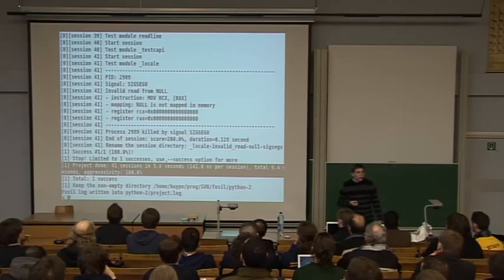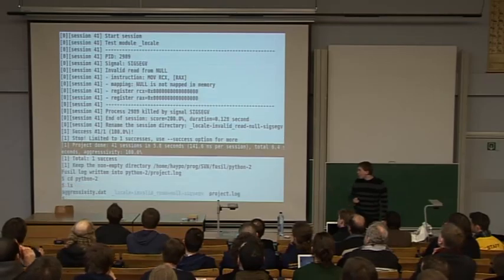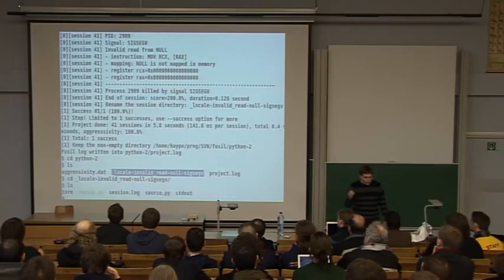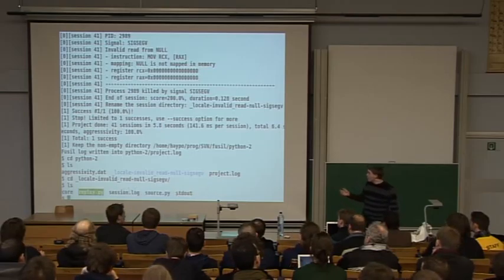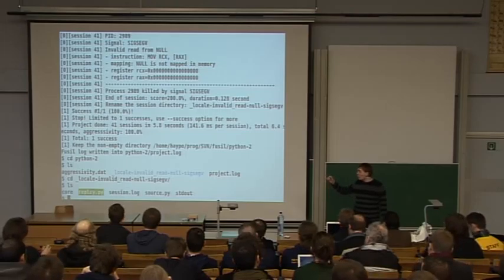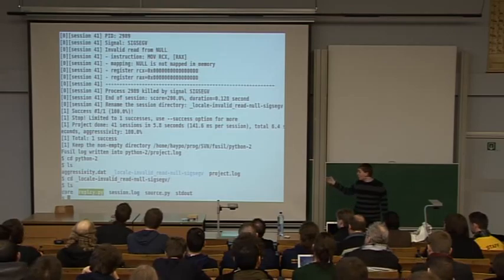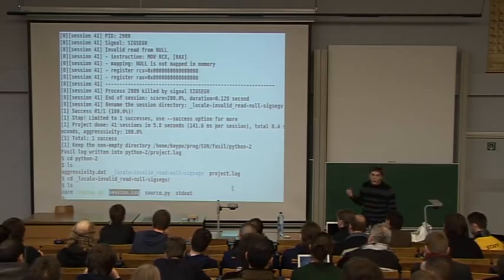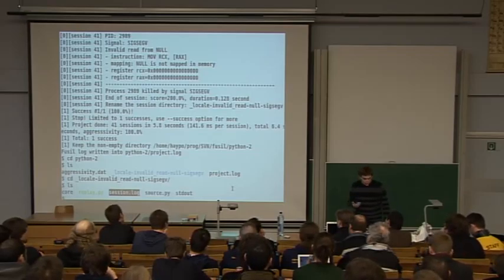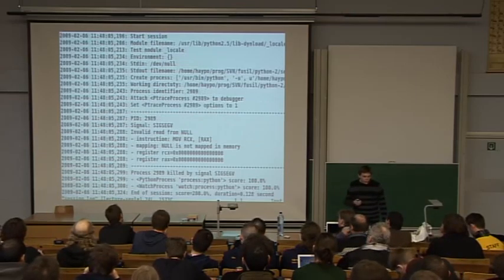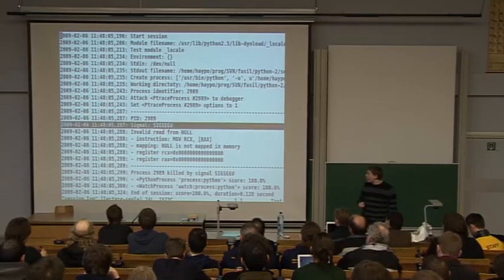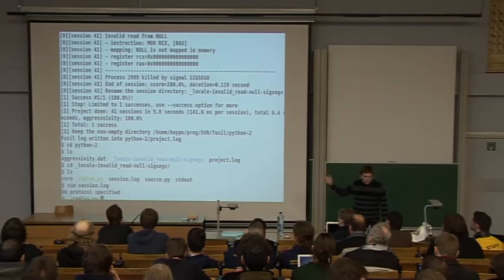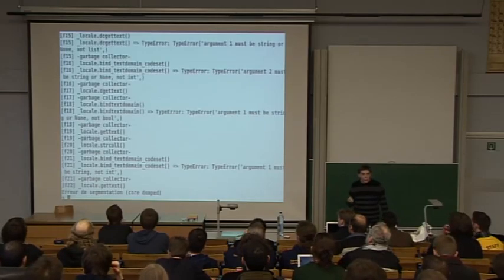When there is a crash, Fusi stores all data in a directory — here it's a directory 'python-2'. We have the project log, which has all logs of the project, and a subdirectory for each crash. In the directory name, you already have information about the crash: the module name, underscore locale, and the type of crash — here, invalid read from null address. In the directory, you have different files: a replay script, session.log with all logs from that crash, standard output, etc. The score is 200%. You can replay the crash with replay.py.